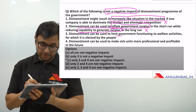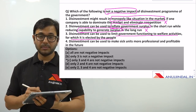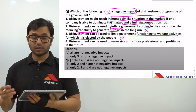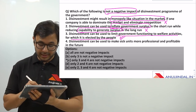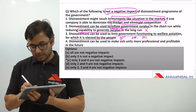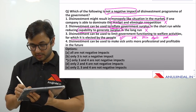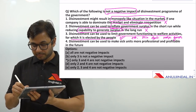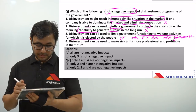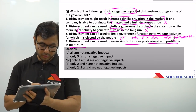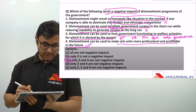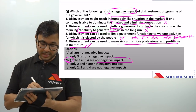Option 3 — disinvestment can be used to limit government functioning to welfare activities for which it is elected by the people — is not a negative point. It is one of the reasons why disinvestment is carried out, reinforcing the idea of minimum government, maximum governance. Option 4 — disinvestment can be used to make PSU units more professional and profitable in the future — is also a positive point, not a negative one. So the answer is C — only options 3 and 4 are not negative impacts.